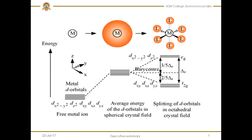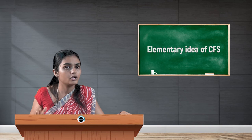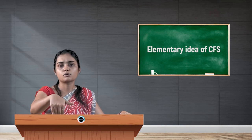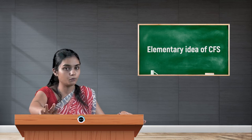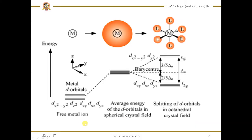This differentiation into t2g and eg is mainly because of the orientation of those orbitals in coordinate space. The t2g set — dxy, dyz, dxz — orients between the coordinate axes, whereas dx²-y² and dz² orient along the axes. Since the negative charges accumulate at certain positions, the degeneracy is lost.